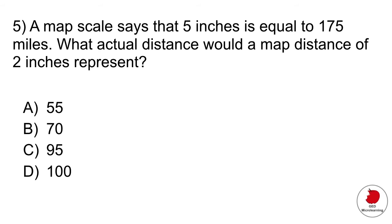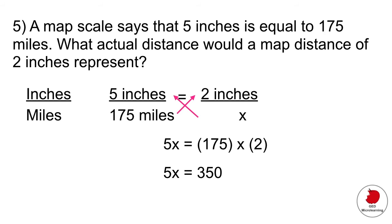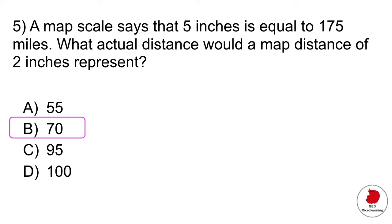This is a proportion question. You have to set up a proportion. It's giving you a distance in inches and telling you what it represents in miles. It's telling you that five inches on the map is 175 miles. So that's how you would set up the proportion. And then it's asking you, so if I have two inches, how many miles is that in real life? So you would set up your proportion like this. And then you would multiply diagonally until you end up with this equation. And then divide both sides by five, that gives you x is equal to 70. Answer B.